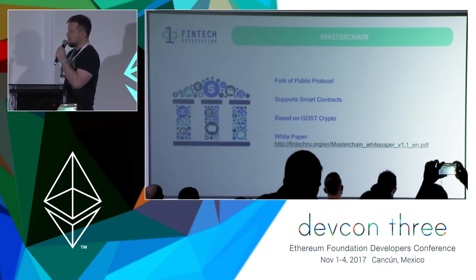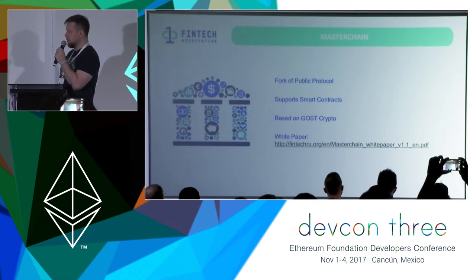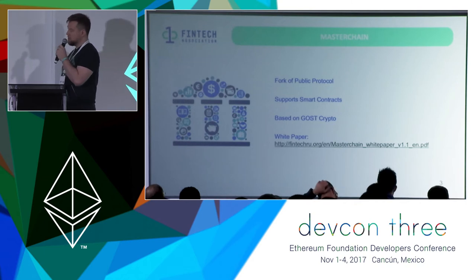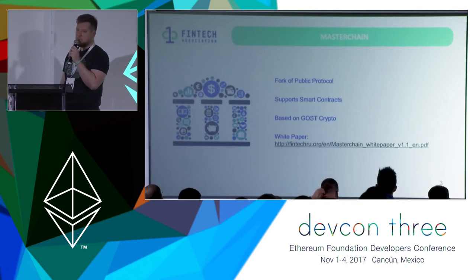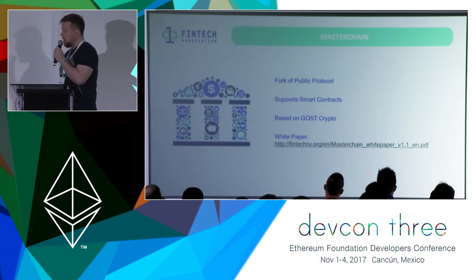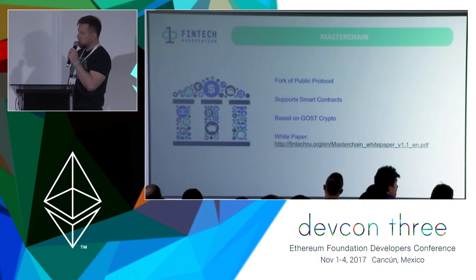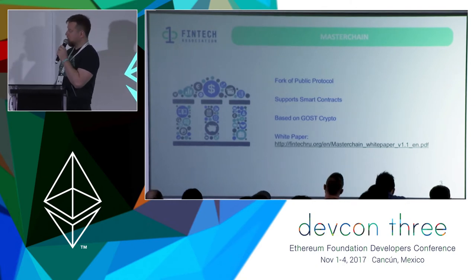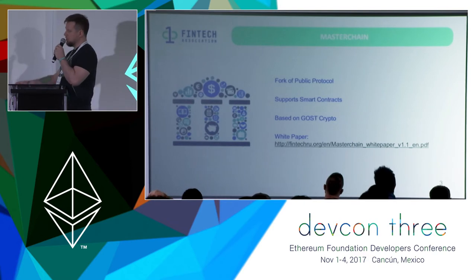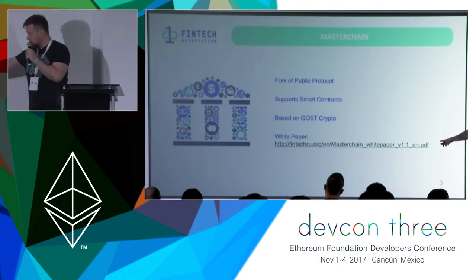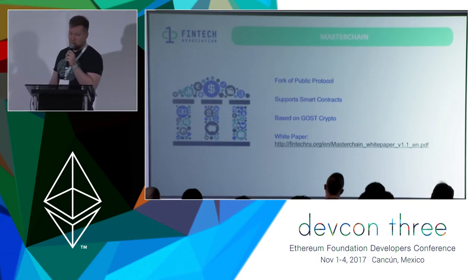MasterChain is a fork of the public Ethereum protocol. It also supports smart contracts, and the main difference is that it is based on GOST crypto. GOST stands for 'Government Standards Cryptum' — it is the main standard in the Russian Federation for all cryptography. If you're interested, you can read the white paper for the MasterChain project at the link shown.